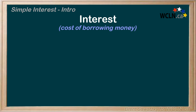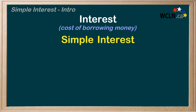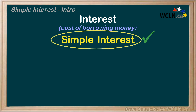The simplest way to calculate interest is called simple interest. And the formula for simple interest is I equals PRT.